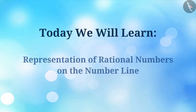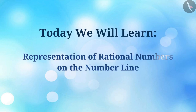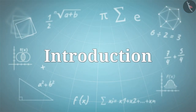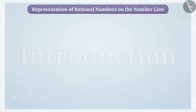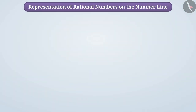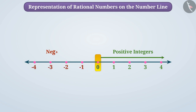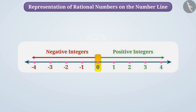Today we will learn the representation of rational numbers on the number line. In the previous class we represented integers on the number line. Positive integers are represented on the right of 0 and negative integers on the left of 0 on this number line. The distance between any two integers is called a unit distance.